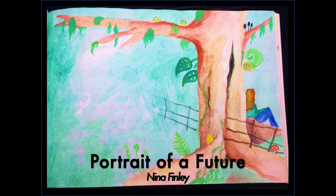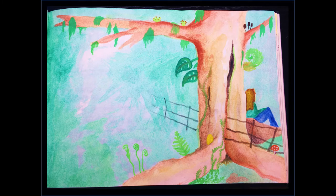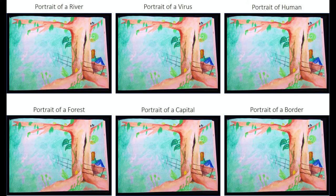This watercolor shows my imagined future of a world without borders. I decided to depict the temperate rainforest that I'm from in Washington State and British Columbia. This painting takes place at what was once the nation-state border between Canada and the United States, but all that remains of that militarized, impermeable border is just a rusted-out fence that a tree has fully consumed.